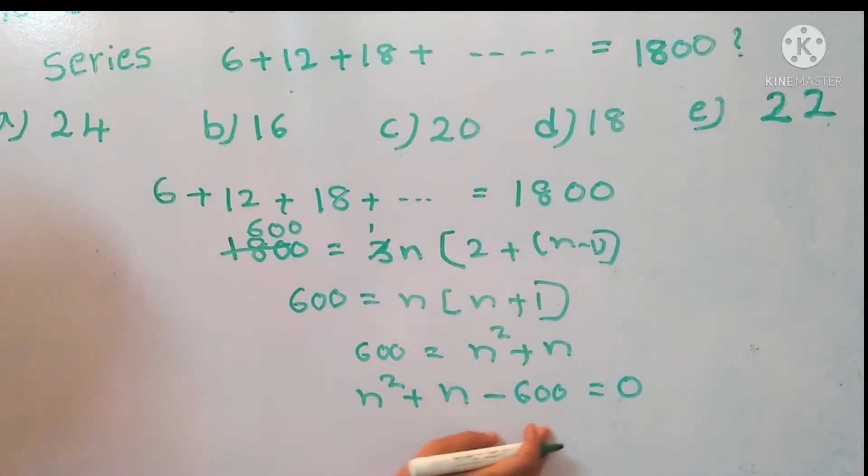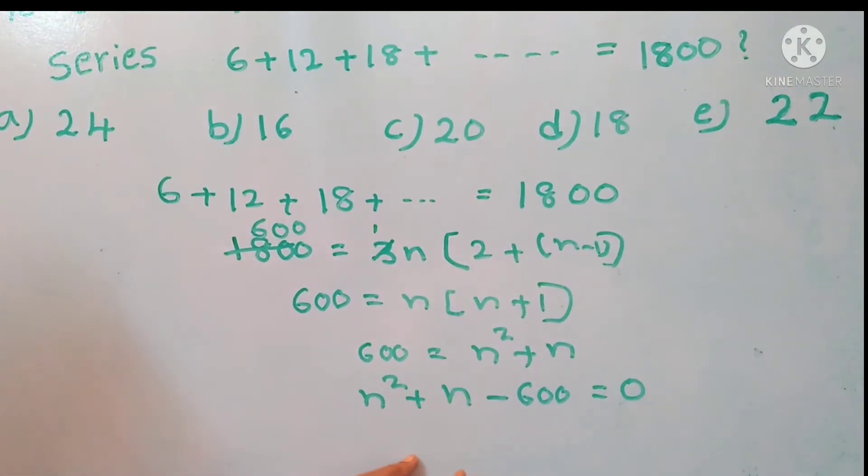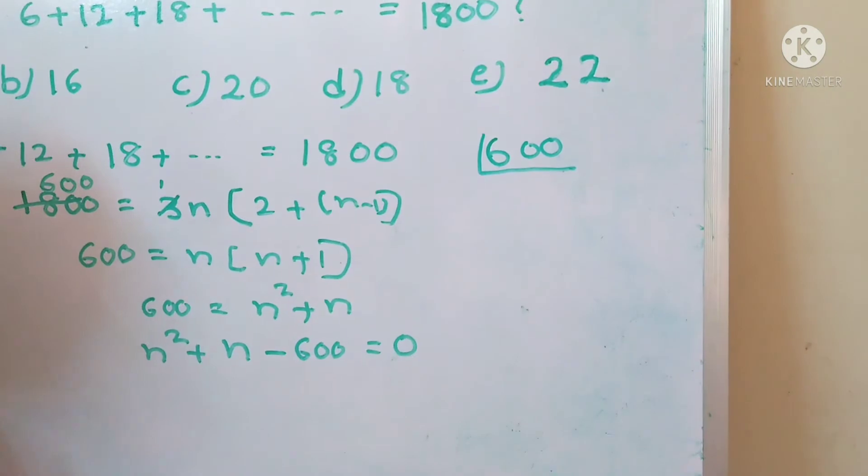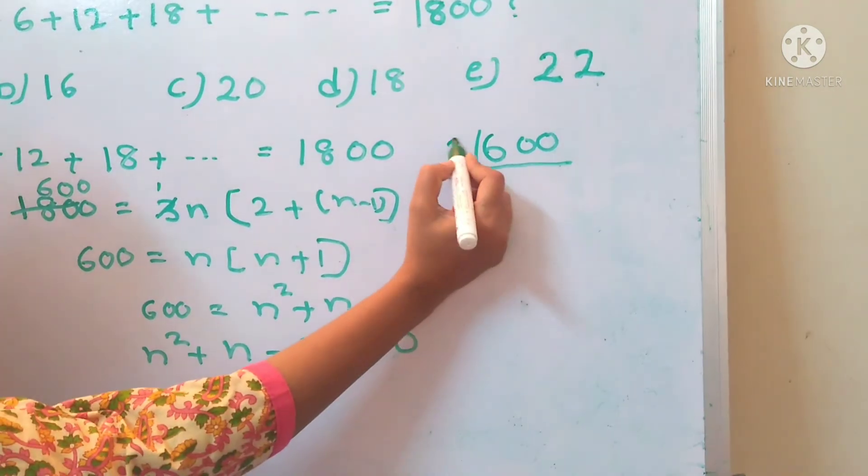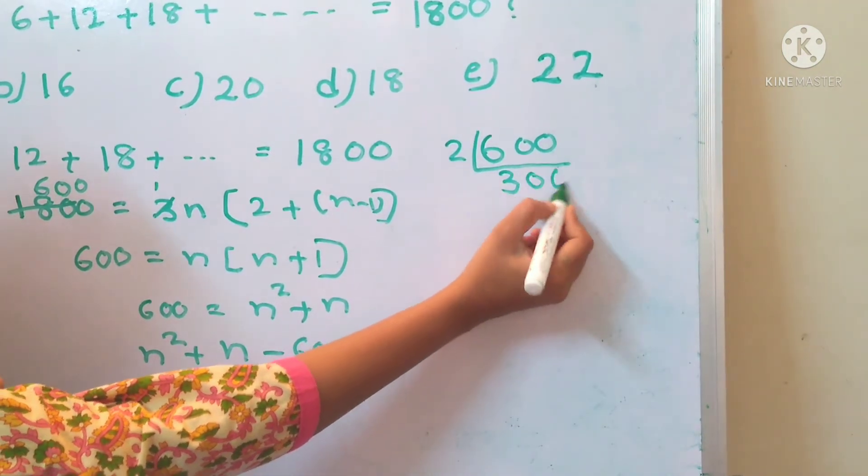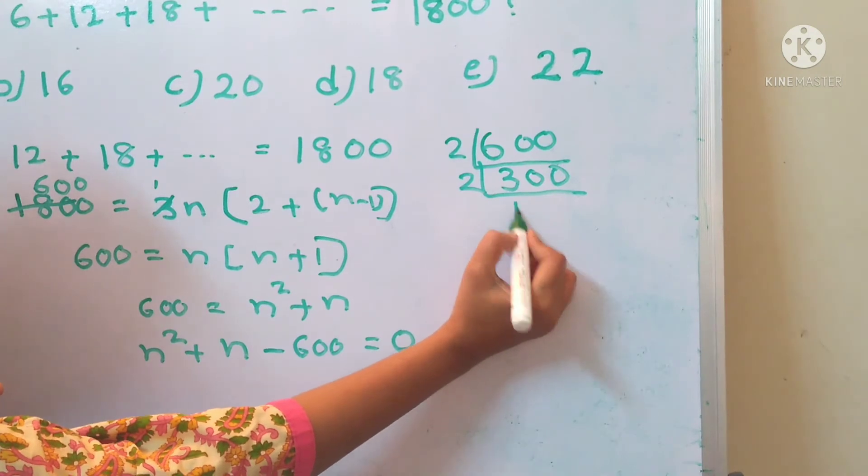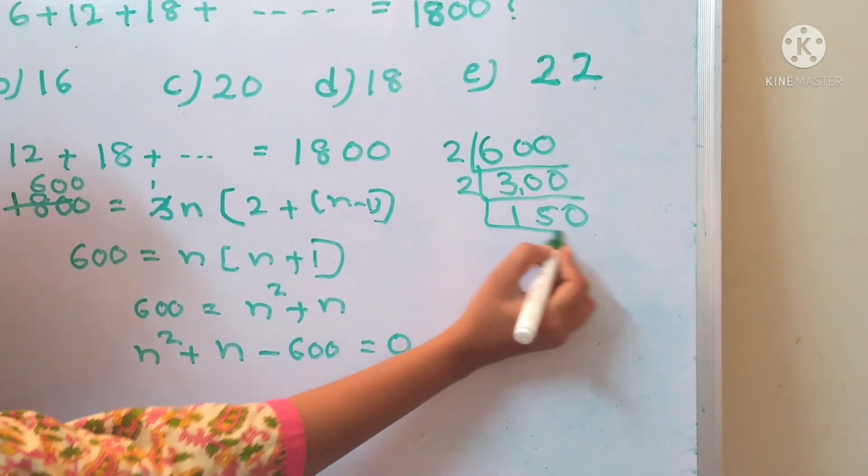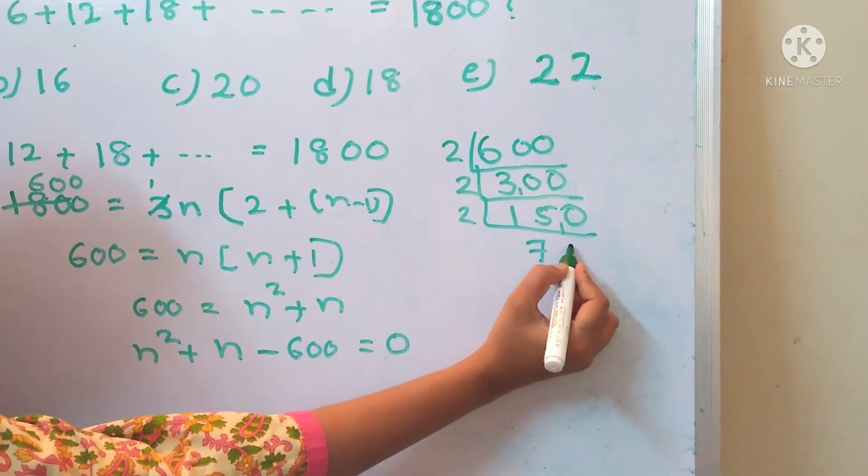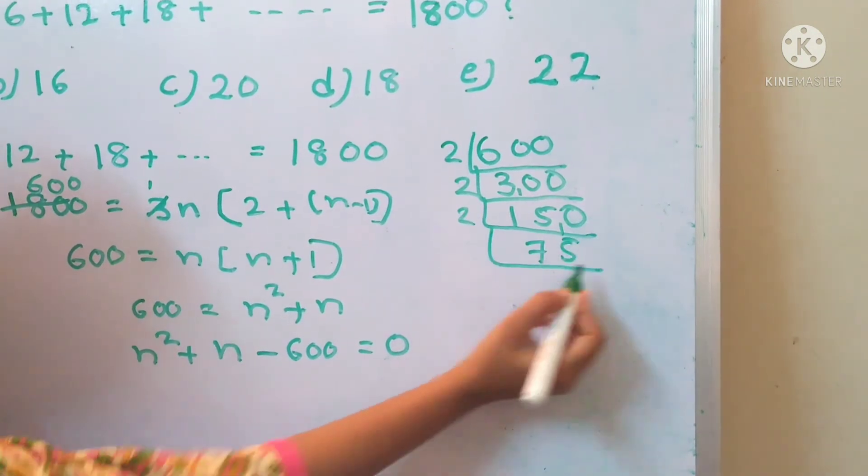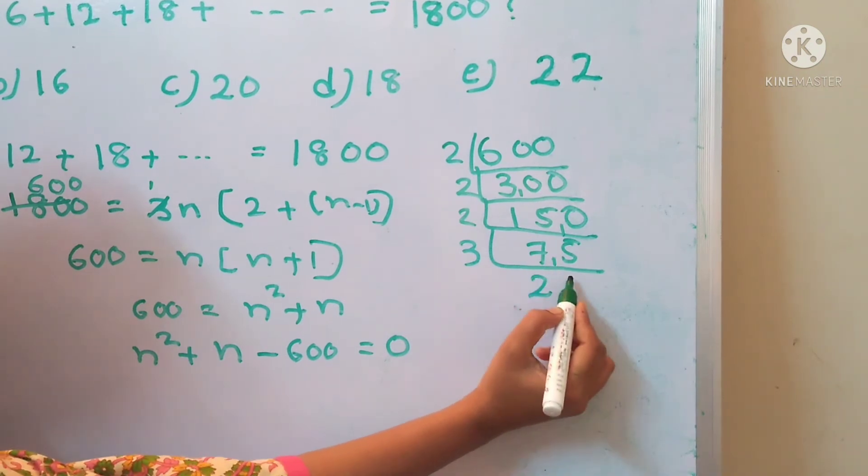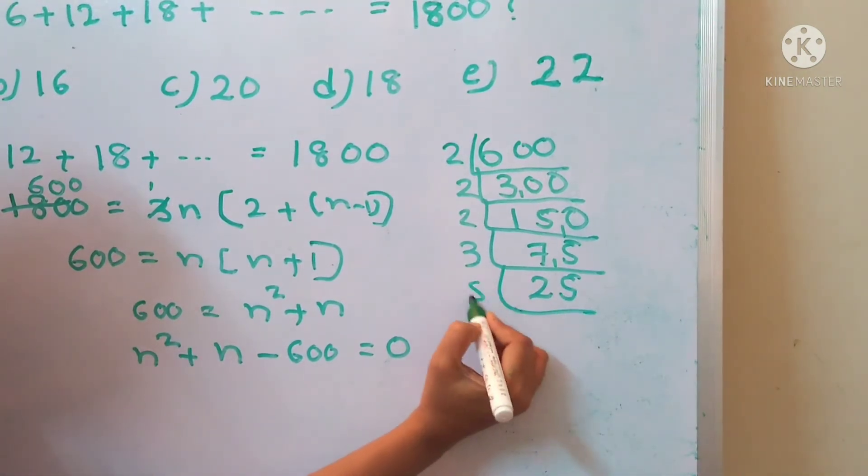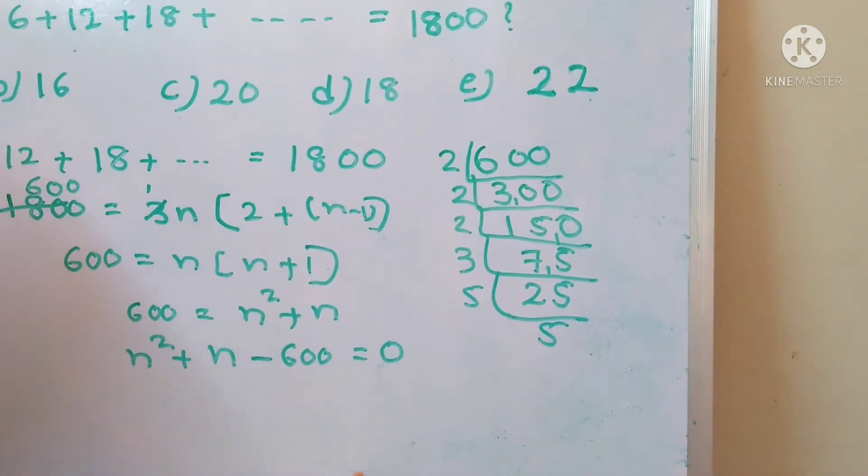We need to find out the factors for 600. So now I am doing the LCM for 600. The least common multiplier: 2, 2, 2, 3, 5, 5. Next, 2 times 2 is 4, 3 times 2 is 6, 5 times 5 is 25.